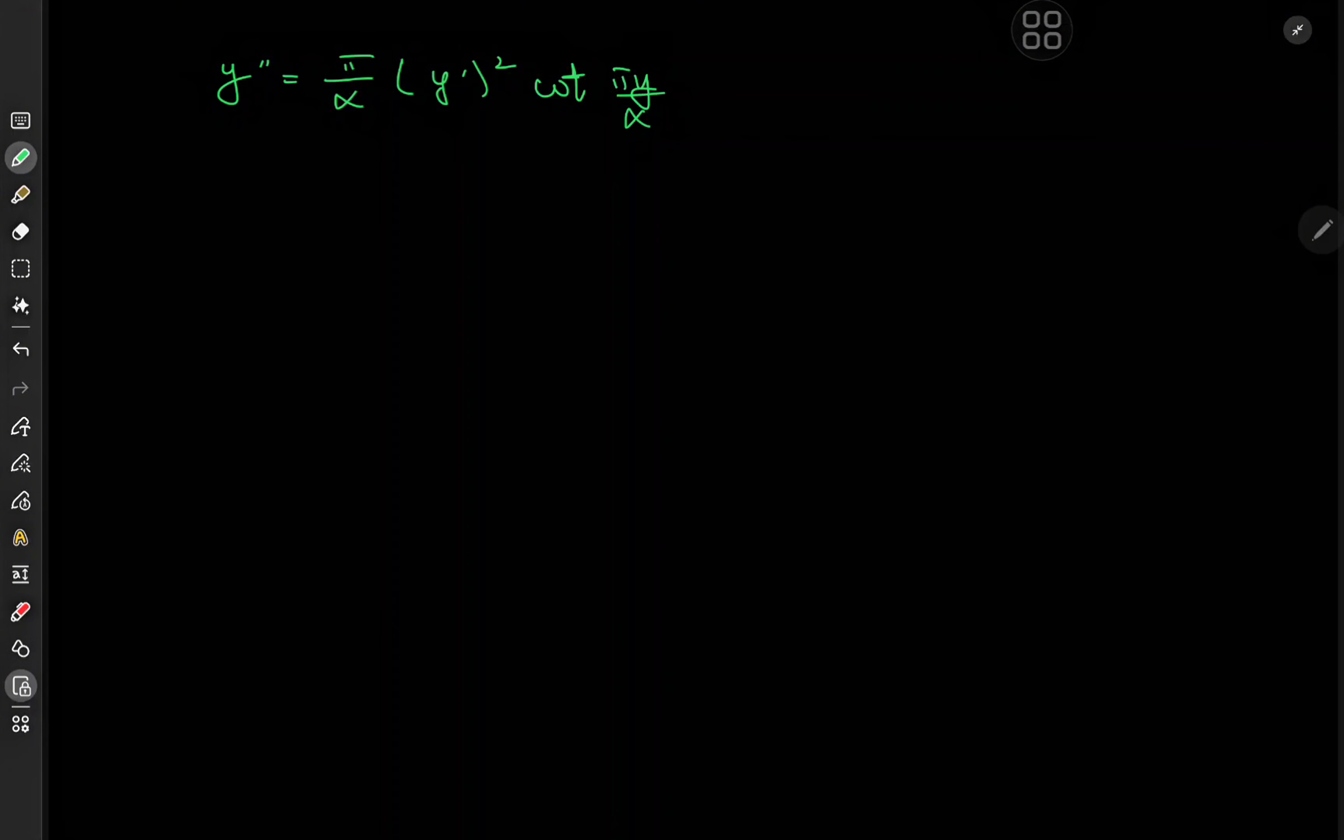Also, the alpha parameter is a real number. The constraints on the alpha parameter would be determined by the domain of the x and y variables, specifically the domain of the x variable and hence the domain of the y variable. Given that we have a cotangent term in there, which could be nasty, let's ignore all of that and just solve the equation for the fun of it.